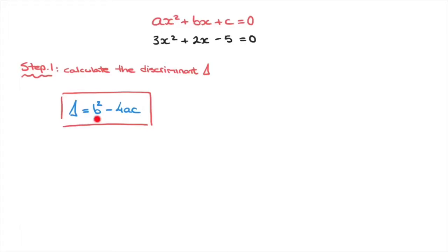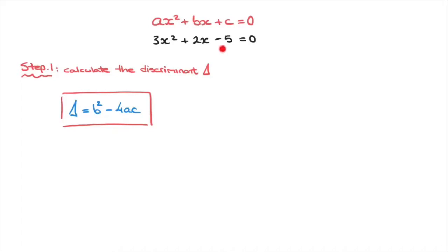Looking at this formula, b, a, and c correspond to the x-coefficient, the x-squared coefficient, and the term without an x. So for the example we have here written in black, b would be 2, a would be 3, and c would be negative 5.